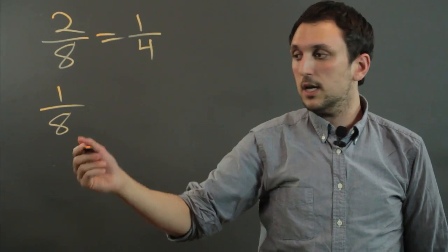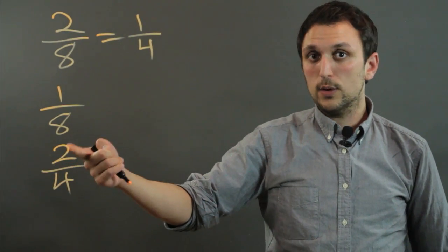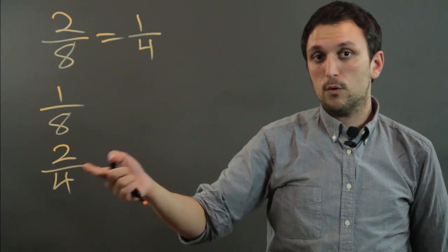Or if you just factored the denominator, like 2 over 4, well, that's different. That's like saying you had 2 slices out of 4, or 4 slices out of 8.